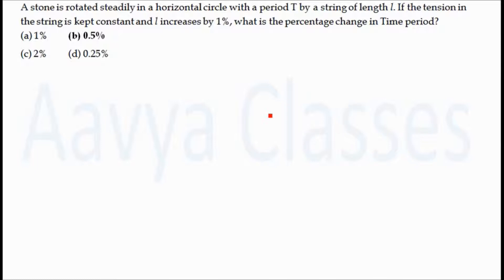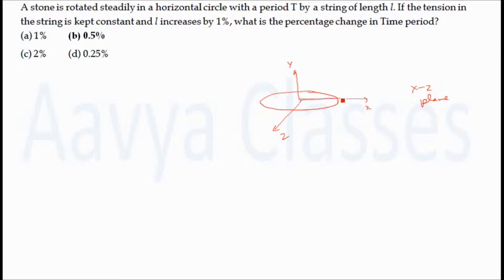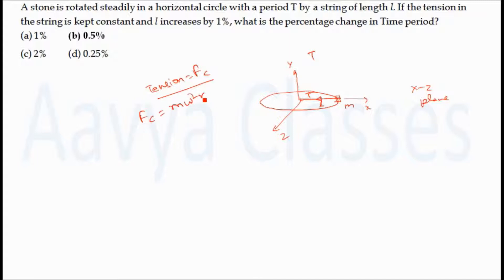First, we will draw the figure pertaining to this problem. The string is rotated in a horizontal circle in the X-Z plane. The length of the string is L and a mass M is attached to it. When a body is rotated in a circular path, it requires centripetal force, and that centripetal force in this case will be the tension T in the string. So tension T equals centripetal force Fc, and Fc equals M·ω²·R, where R equals L, the length of string. So tension equals M·ω²·L.